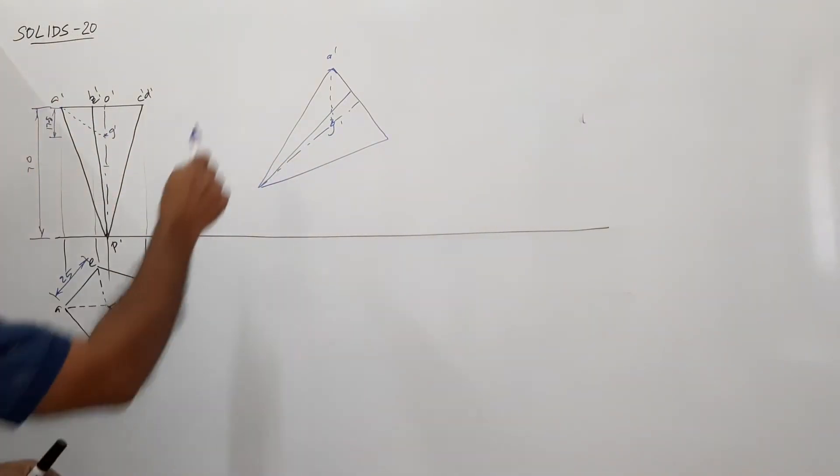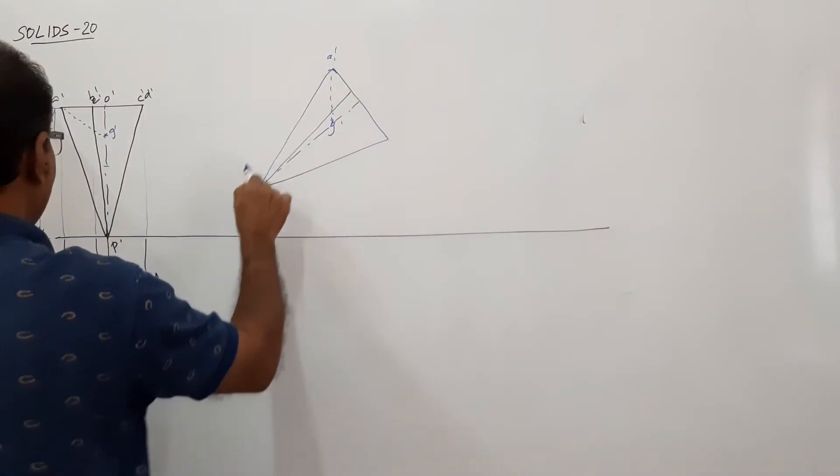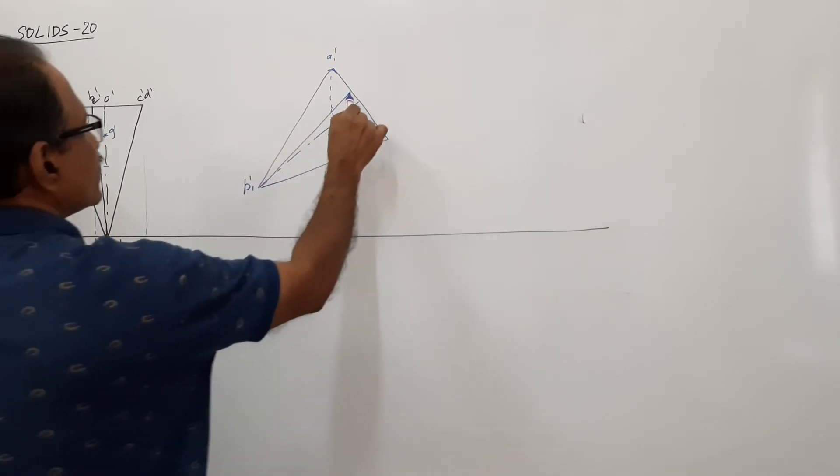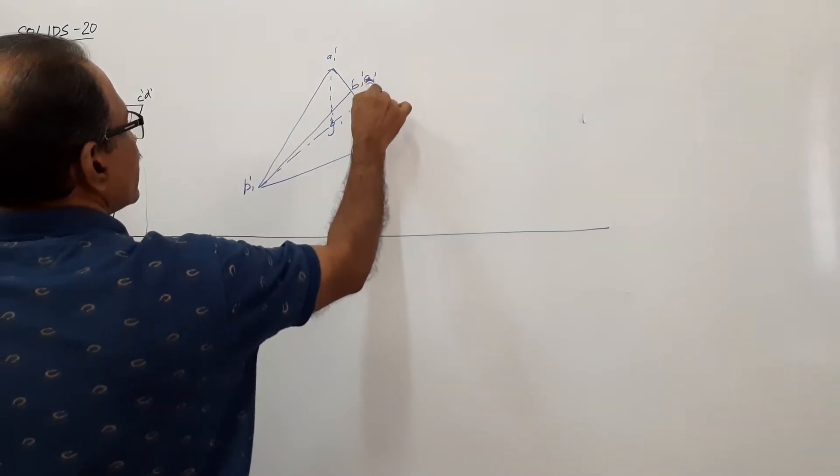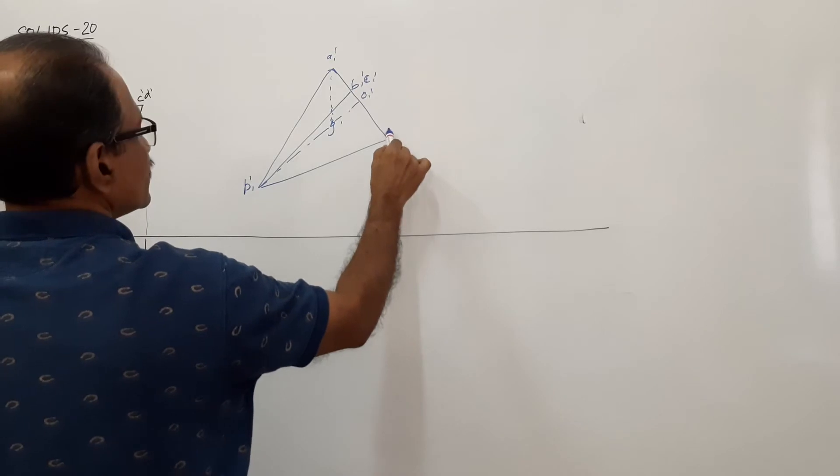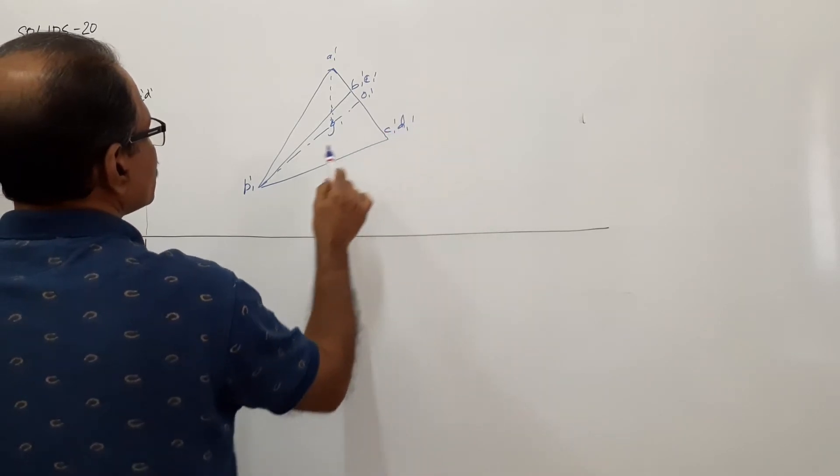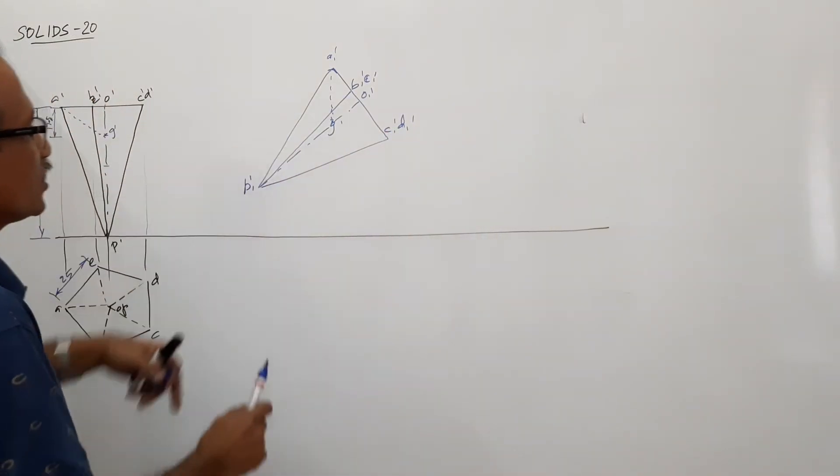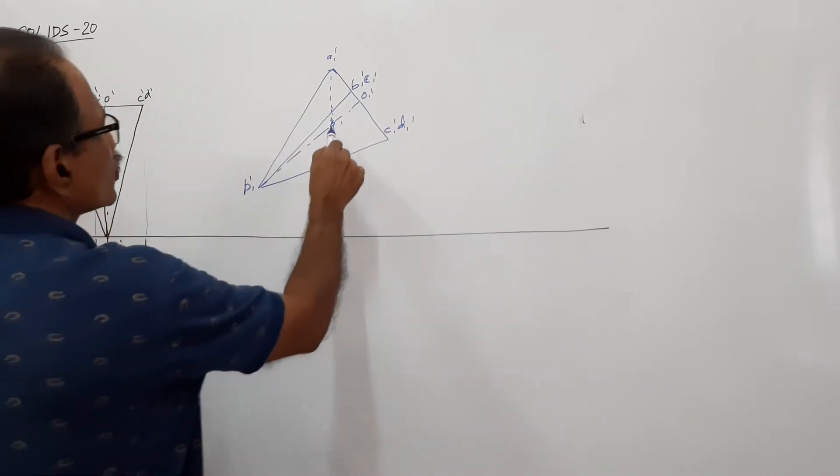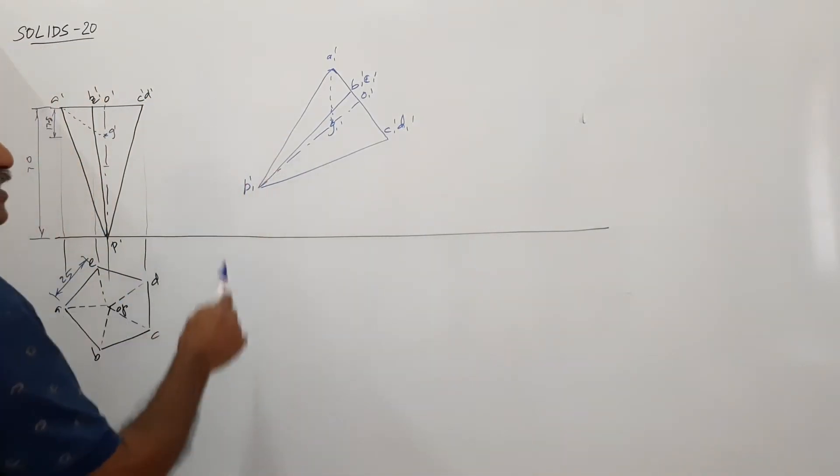I have just managed to reproduce it. A dash, A one dash, P one dash. This is B one dash, E one dash, O one dash, C one dash, D one dash. A dash, G dash, what is that? I mean, vertical. A dash, G dash, vertical.